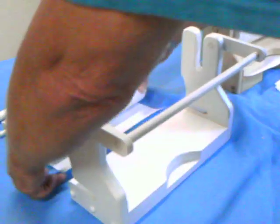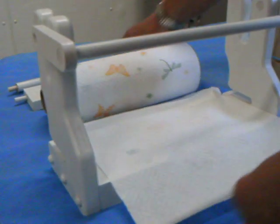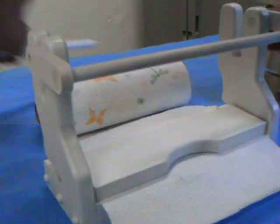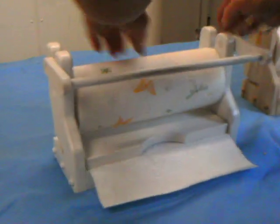To load it, we just take the paper and load it into the bed, like that, and then we slide the bar into place, put the roller through the paper, and let that fall into the slots.